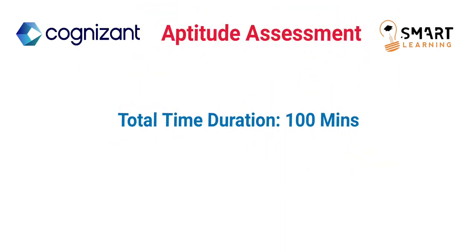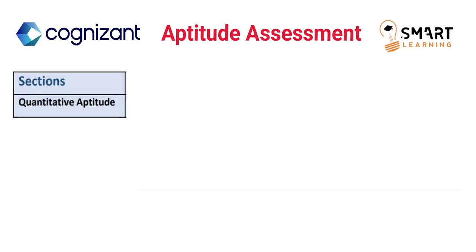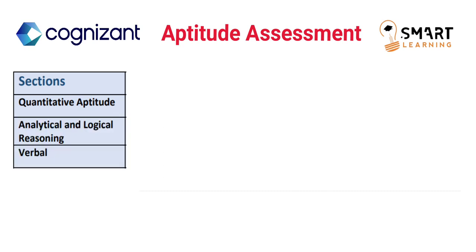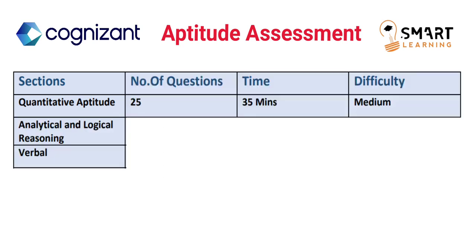The total time duration will be 100 minutes. The aptitude round consists of three separate sections: the first one is quantitative aptitude, the second one is analytical and logical reasoning, and the third one is verbal. For the first section — quantitative aptitude — 25 questions will be given with a time limit of 35 minutes, and the difficulty of this section will be medium.